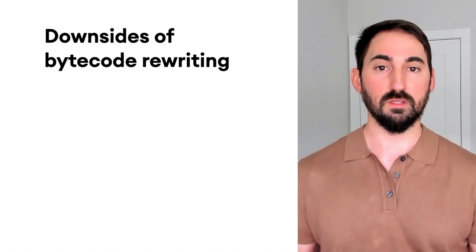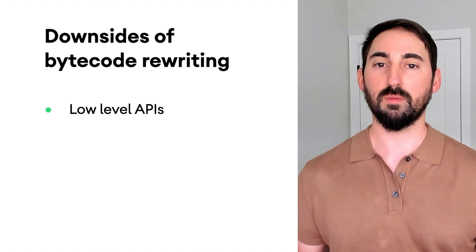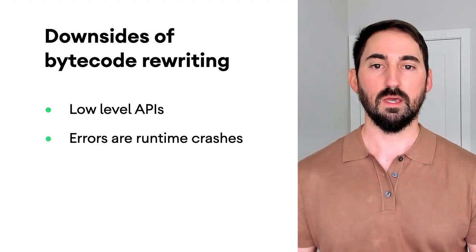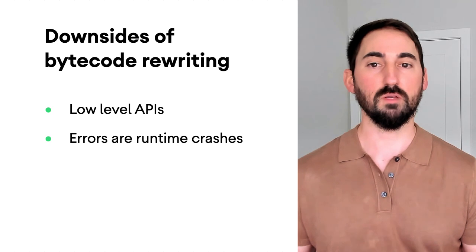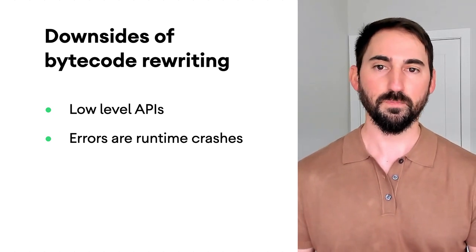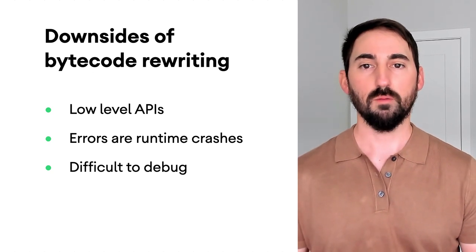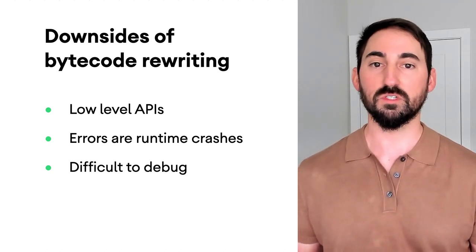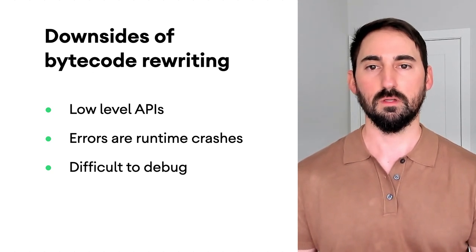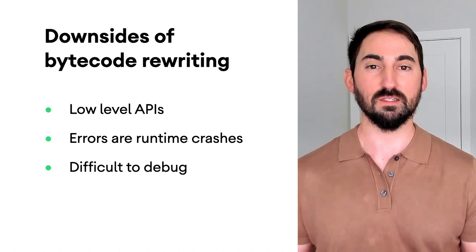There are some serious downsides to bytecode rewriting. First, changes have to be made using low-level bytecode rather than source code. In addition, because the bytecode has already been compiled, any issues generally show up at runtime rather than compile time. Not only does this make rewriting bytecode risky, but it also complicates debugging — since when something does go wrong, the source files may not represent the bytecode that's being executed. For these reasons, Hilt tries to rely on bytecode rewriting as little as possible.